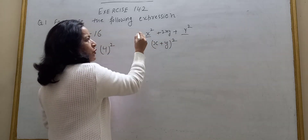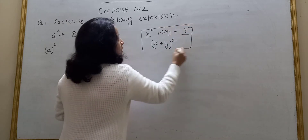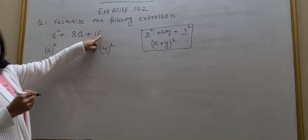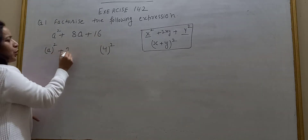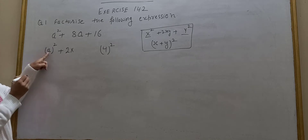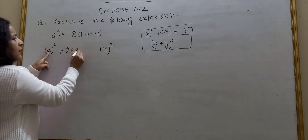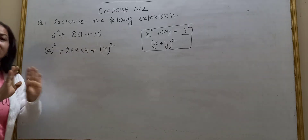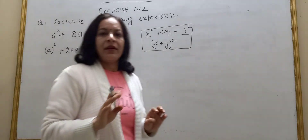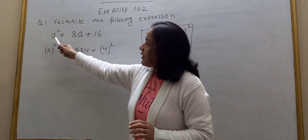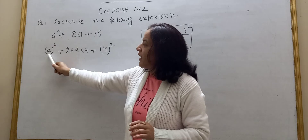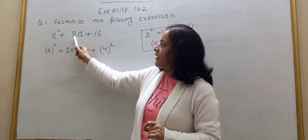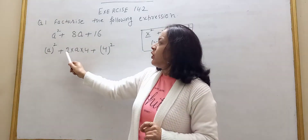X plus Y whole square is equal to this identity. So I apply this identity here. First term square plus second term square plus 2 times first term — first term here is A, second term is 4. A squared equals A power 2, 16 equals 4 squared, and 8A I write in the form 2 into 4 into A.